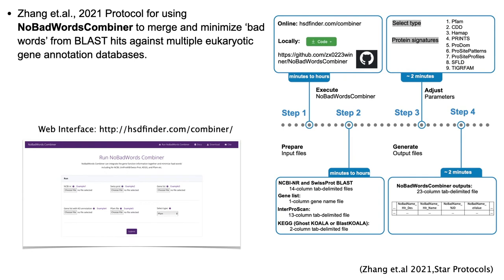Here is another example — a small but practical web tool that can be run either online or locally. Annotating protein coding genes can be challenging, especially when searching for the best hits against multiple functional databases. The 'No Buzz Words Combiner' can strengthen gene definitions by minimizing protein function descriptions containing buzz words such as 'hypothetical' or 'uncharacterized proteins,' so as to polish the gene annotations. Similar to HSDFinder, we guided users to prepare their input files step-by-step in a graphical abstract, including possible running errors and software compatibility.